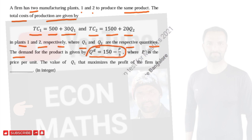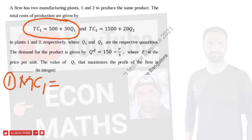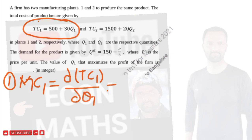The demand for the product is given by a price equation where p is the price per unit. We have to find the value of q1 that maximizes profit of the firm. Now, what is the marginal cost in plant one? Marginal cost is the derivative of total cost with respect to quantity — that is dTC1/dq1. The derivative of the constant 500 is zero, and the derivative of q1 is one, so we are left with 30. Marginal cost in plant one is 30.